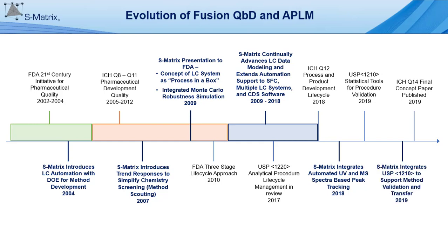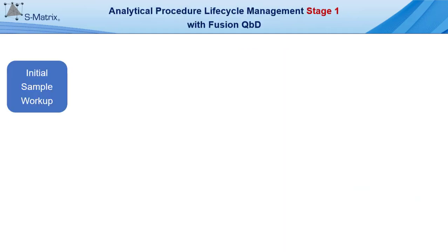And in 2019, S-Matrix integrated the USP 1210 tolerance and prediction interval calculations and reporting to correctly combine method accuracy and precision into a single robust system suitability performance metric. Let's now briefly look at Fusion QBD within the context of analytical procedure lifecycle management, first with stage one method design and development.